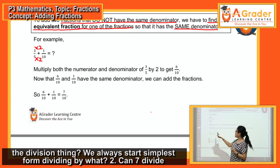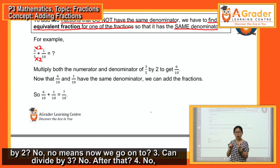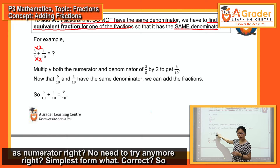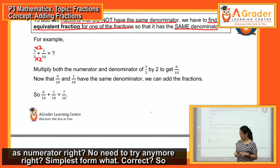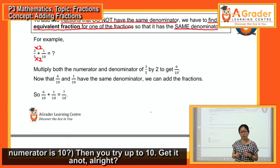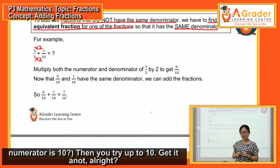Why can't we simplify 7 out of 10? We always start checking simplest form by dividing by 2. Can 7 divide by 2? No. Then try 3 — no. Then 4 — no. Then 5 — no. Then 6 — no. Then 7 — can 10 divide by 7? No. Once you reach the same number as the numerator, no need to try anymore — it's already in simplest form. So 7 out of 10 is the final answer. You try up to the numerator value.